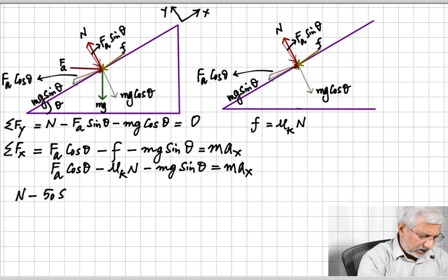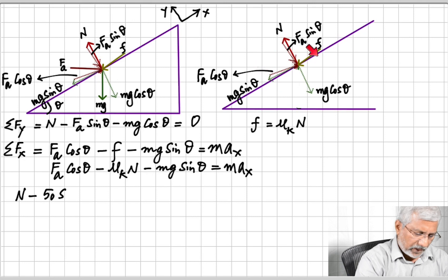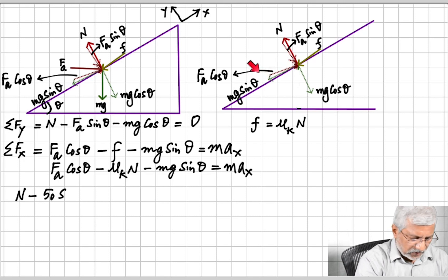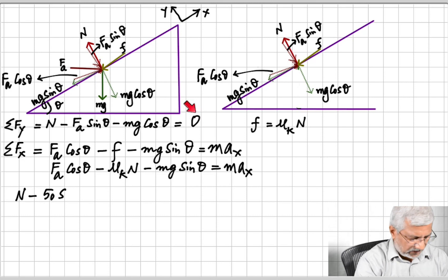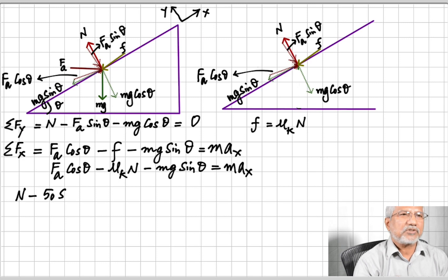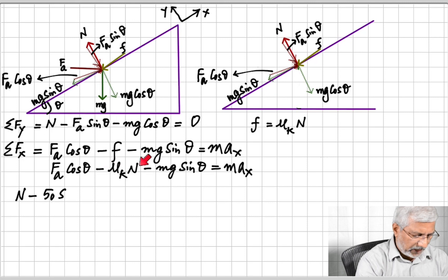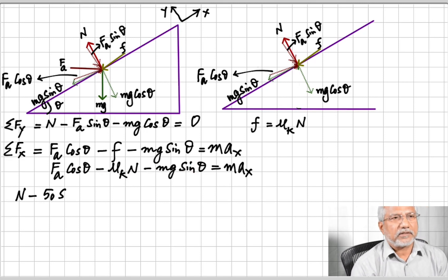On the x-axis, Fa cosine θ acts up the ramp, while friction and mg sine θ both act down. So the net force equation is: Fa cosine θ − friction − mg sine θ = ma_x. We substitute friction = μk·N, and that's all the physics. Whatever we're asked to solve for, we can now do so — in this case, we need to find the acceleration a_x.